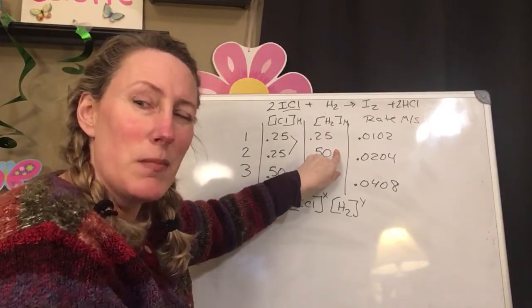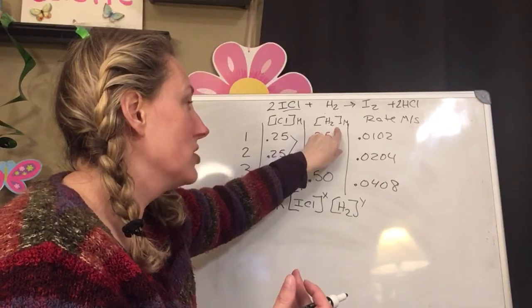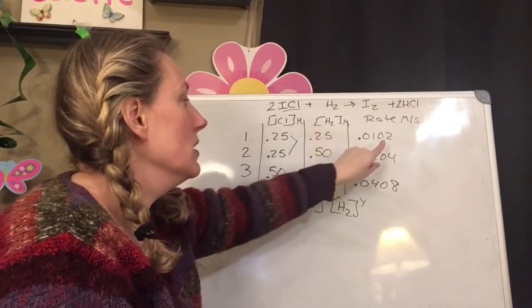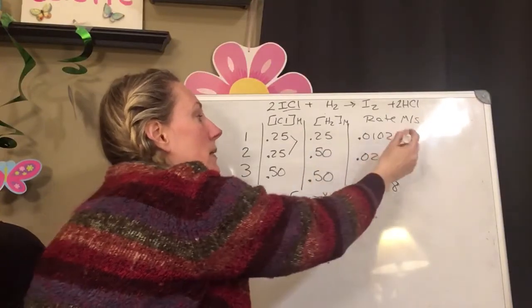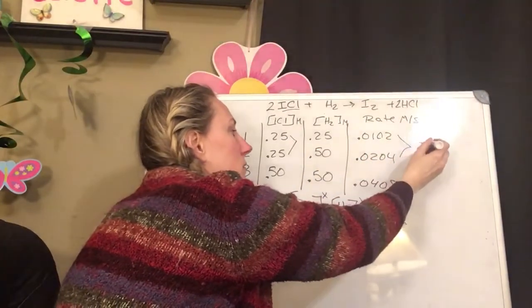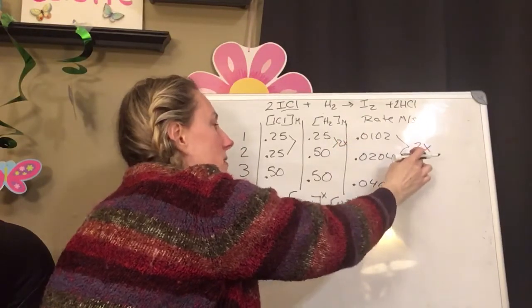So what happened to the rate? Because the rate increase would be due to the higher concentration of the hydrogen gas. So when this doesn't change and the hydrogen gas did change, my rate also doubled. So when this doubles, my rate doubles.